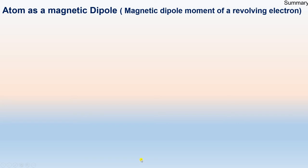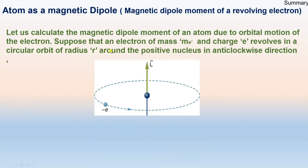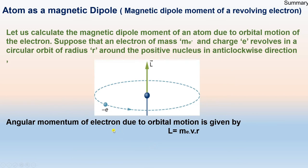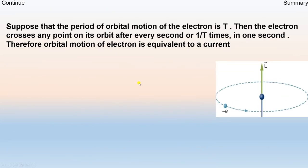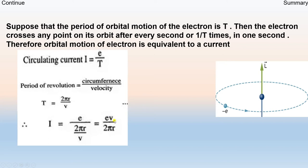To summarize: for the magnetic dipole moment of an atom due to orbital motion of an electron, suppose an electron of mass Mₑ and charge e revolves in a circular orbit of radius R around the positive nucleus in anticlockwise direction. The angular momentum is L = MₑVR. The orbital motion is equivalent to a current I = e/T, and with T = 2πR/V, the current I = eV/2πR.